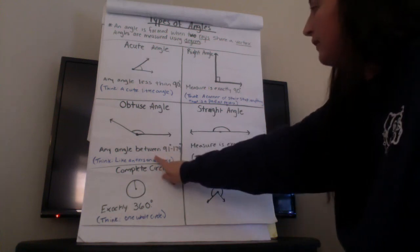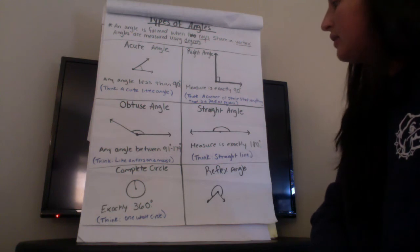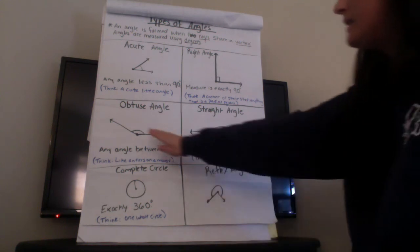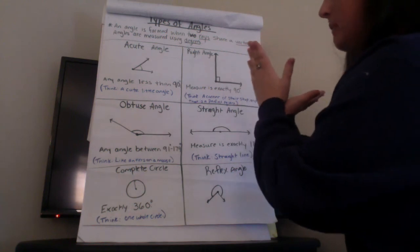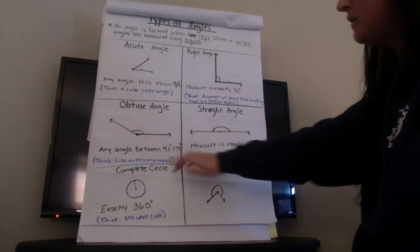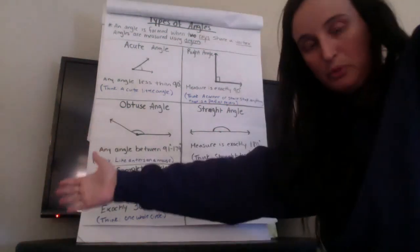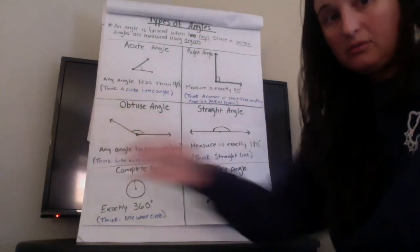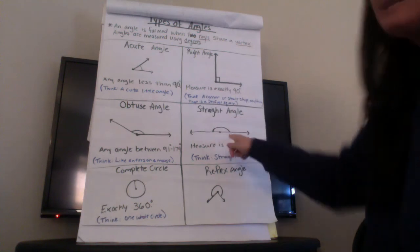An obtuse angle is an angle between 91 degrees and 179 degrees so it means it's bigger than a 90 degree angle, a right angle, but it's less than a straight line, a straight angle. So think of it like antlers or moose ears, big angle, obtuse.